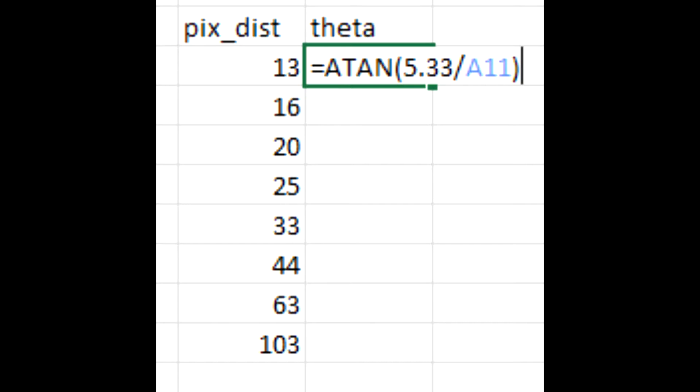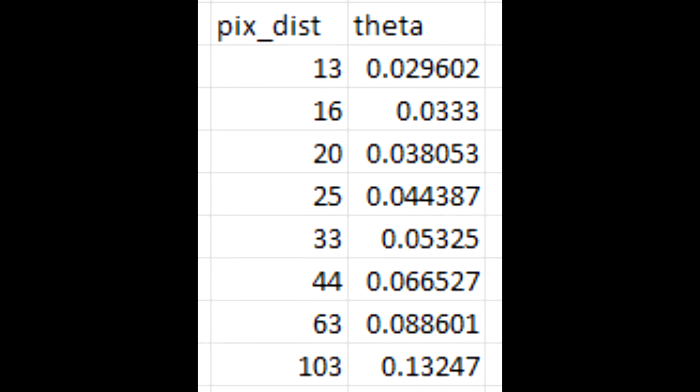So what you do is you just type that into the Excel equation for each cell. ATAN 5.33, which is our distance from webcam to laser, all over - and this cell is our d values - just filling into that equation. So you just click and drag, click and drag, and then you have all these values of pixel distance and theta.